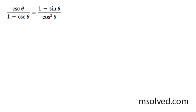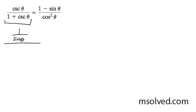We're going to prove the following trig identity. We're going to start by going through the left side and converting it into basic terms. What I mean by that is we're going to set up cosecant theta as 1 over sine theta, and then we'll have 1 plus 1 over sine theta.